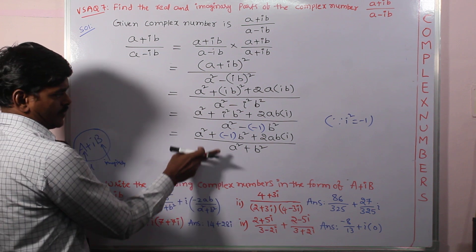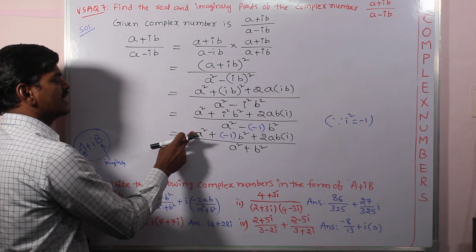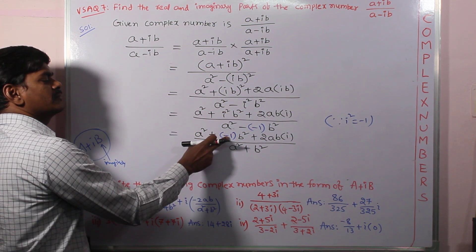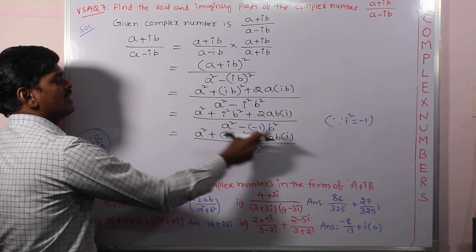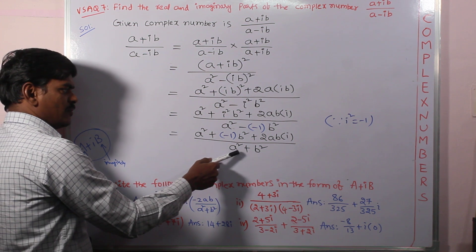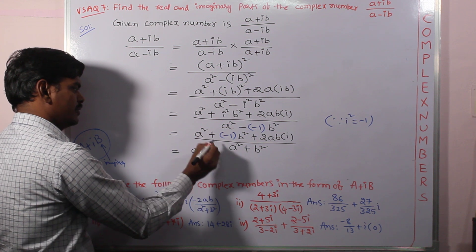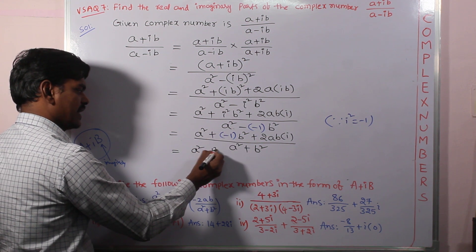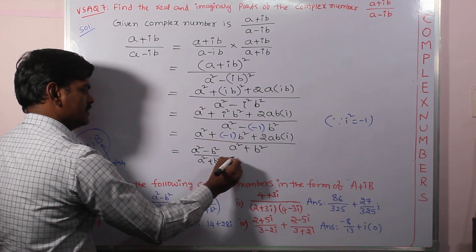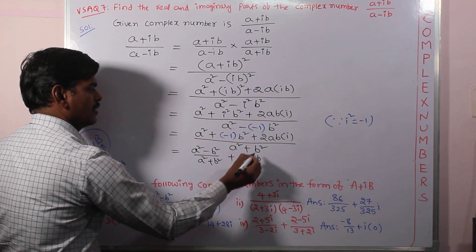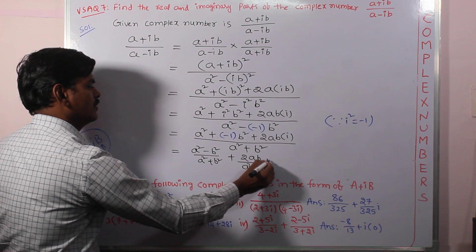Now we can separate the real and imaginary parts. In the numerator, a² - b² is the real part and 2ab is the imaginary part. This denominator a² + b² applies to both parts. So the answer is (a² - b²)/(a² + b²) + i · 2ab/(a² + b²).